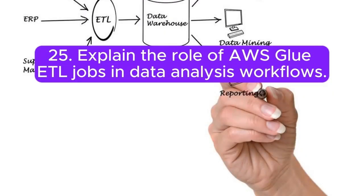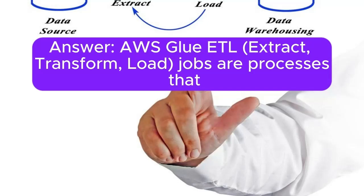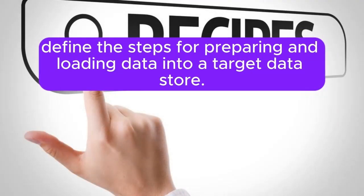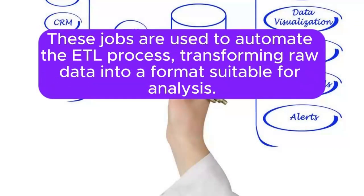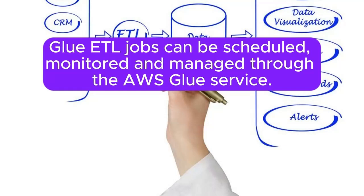25. Explain the role of AWS Glue ETL jobs in data analysis workflows. Answer: AWS Glue ETL (Extract, Transform, Load) jobs are processes that define the steps for preparing and loading data into a target data store. These jobs are used to automate the ETL process, transforming raw data into a format suitable for analysis. Glue ETL jobs can be scheduled, monitored, and managed through the AWS Glue service.